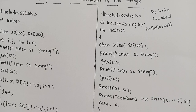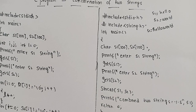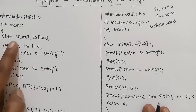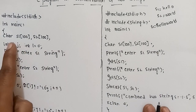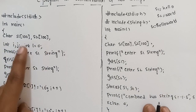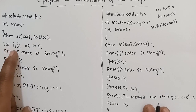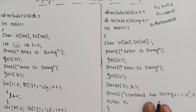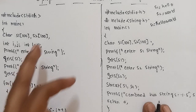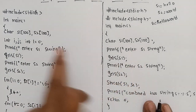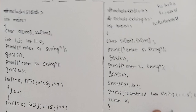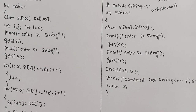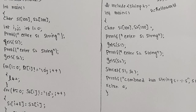Now, without using the string handling function — strcat will not be used. We start with header file inclusion and main. We define char S1 of 100 and char S2 of 100, then declare variables i and j. We will write the logic to handle the strings manually.